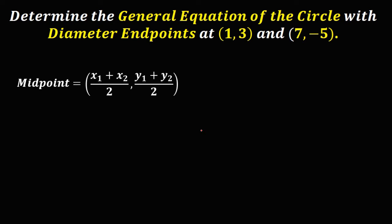The midpoint formula is: x₁ plus x₂ over 2, and y₁ plus y₂ over 2. In the given, x₁ is 1, y₁ is 3, x₂ is 7, and y₂ is -5. Now substitute the values.